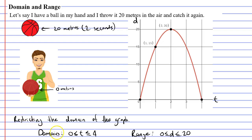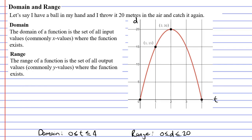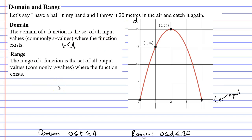So what are the technical definitions for domain and range? The domain of a function is the set of all input values — commonly x values — where the function exists. The input values are always on the horizontal axis, in this case the t axis. This function only exists for t values between 0 and 4, so those are the input values where this function exists. That's our domain for this graph.